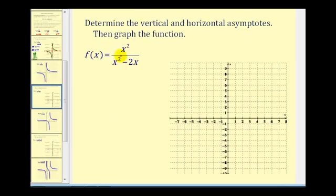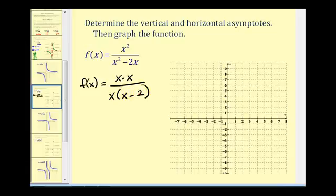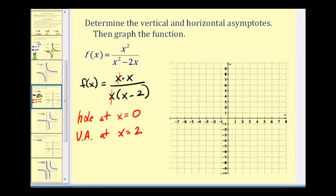In our second example, the first step is to factor both the numerator and denominator. The numerator x squared factors as x times x, and the denominator also has a common factor of x. Even though zero and two are zeros of the denominator, they don't both result in vertical asymptotes: since x equals zero is also a zero of the numerator, there's a hole at x equals zero, and there is a vertical asymptote at x equals two. Since the degree of the numerator and denominator are both two, the horizontal asymptote is the ratio of the leading coefficients, giving y equals one.